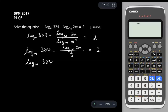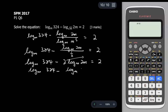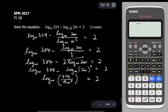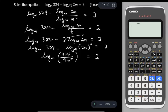The 1/2 at the bottom I bring up to become times 2, and then the 2 I bring up as a power. So we get log base m of 324 minus log base m of (2m)² equals 2. Combining under one log base m: log base m of 324 over 4m² equals 2.